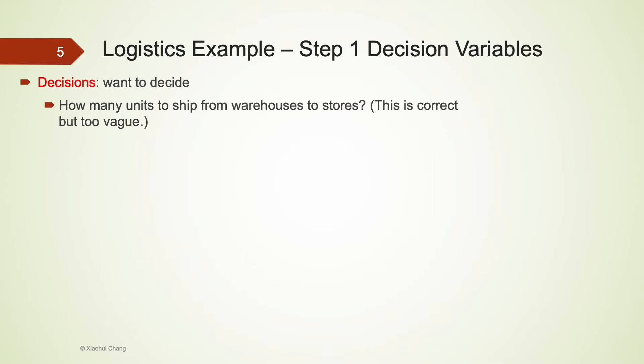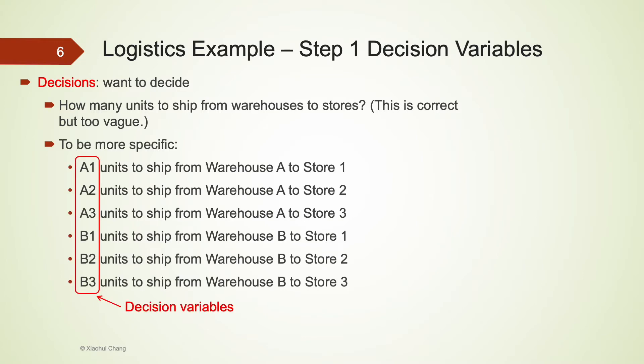Let's complete the four steps in linear programming. Step one has several parts. The very first part involves defining the decision variables. The decision variables are the variables involved in the delivery plan, that are the number of units to ship from each warehouse to each store. This is a little bit too vague though. To be more specific, we would have to consider six variables in this delivery plan. We would name the number of units to be shipped from warehouse A to store 1 as A1 and A2 as the number of units to be shipped from warehouse A to store 2. So you can see there is a systematic pattern for how I name these variables. And these six variables are indeed the decision variables for this problem.